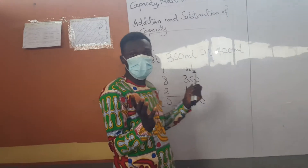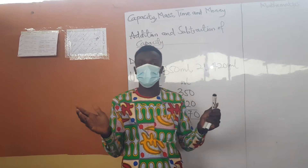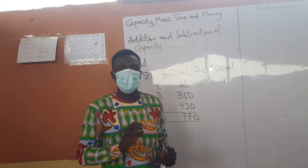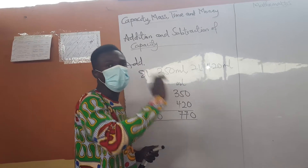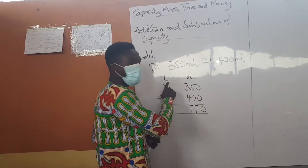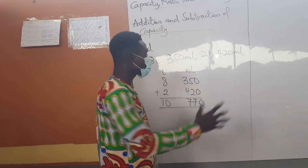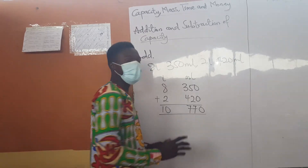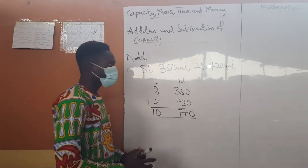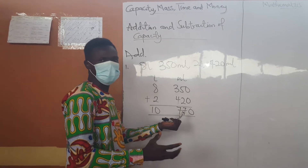It is just like the normal addition and subtraction. What differentiates it is the unit — liters for huge amounts and milliliters for small amounts. So this is the addition of capacity.